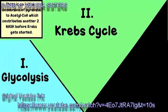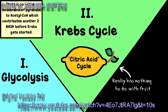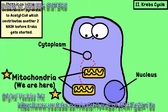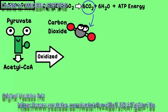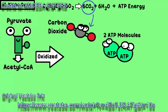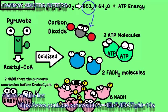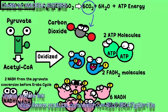Number two is the Krebs cycle, also called the citric acid cycle. We are now involved in the mitochondria, and this step requires oxygen. The pyruvate that was made before is now converted and will be oxidized. Carbon dioxide, CO2, is produced, and we produce two ATP, six NADH, and two FADH2. FADH is also a coenzyme, like the NADH, and it will also assist in transferring electrons to make even more ATP.